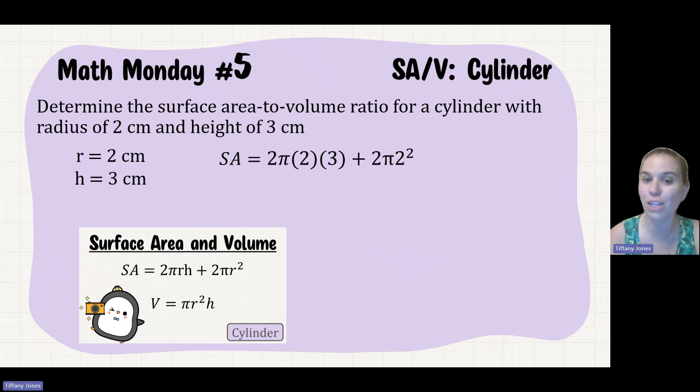So 2πr being 2 times our height being 3 plus 2πr being 2 squared. So 2 times 3 is 6, and then 2 squared is 4. 2 times 6 is 12, and 2 times 4 is 8. So 12 plus 8 is going to give me 20, and don't forget to bring your π along for the ride.